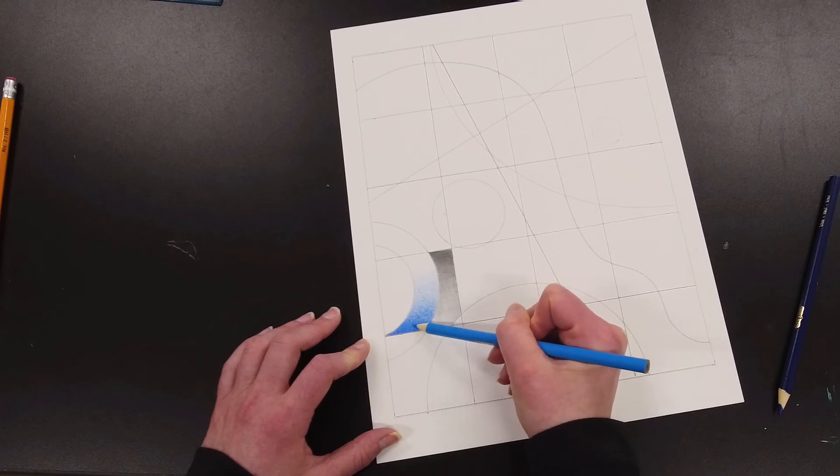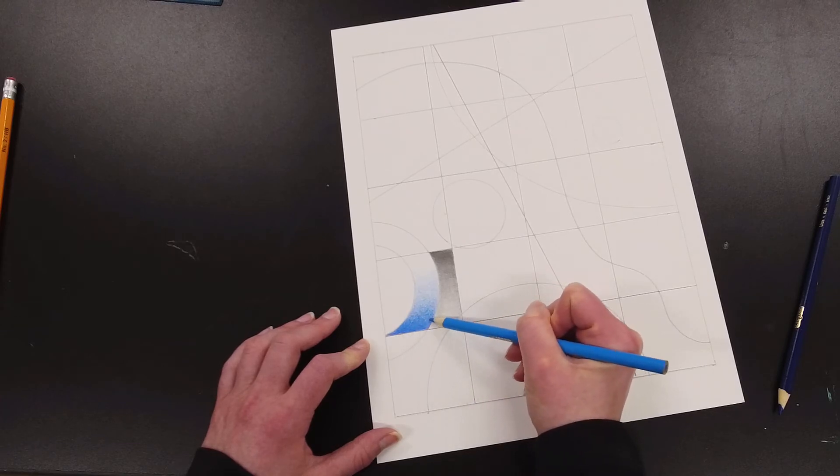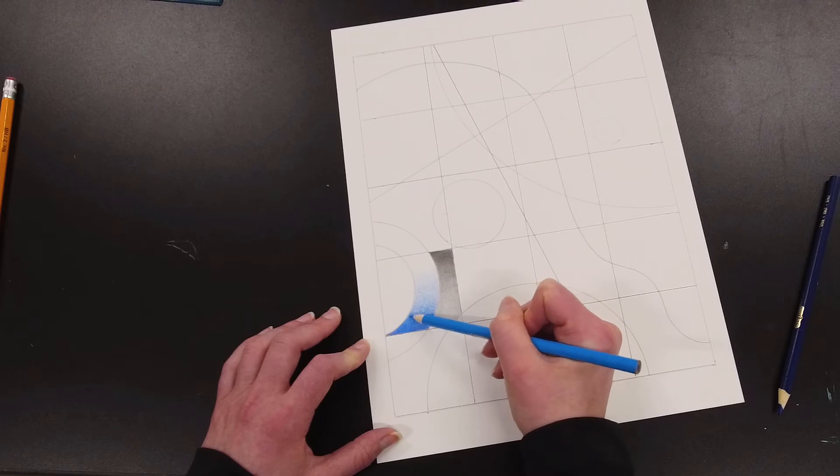You can see that the value transition here is pretty smooth and it's definitely more dramatic each layer I put on.